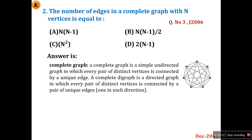A complete graph is a simple undirected graph in which every pair of distinct vertices is connected by a unique edge. Every vertex has equal degree. In a directed complete graph, every pair of distinct vertices is connected by a pair of unique edges — one in each direction. Every vertex is connected with all other remaining vertices.